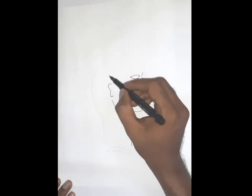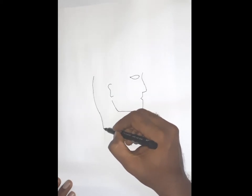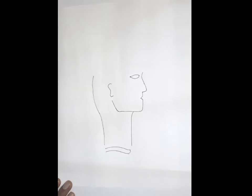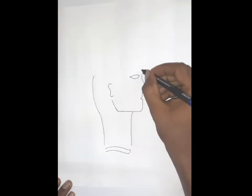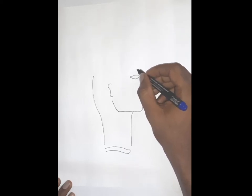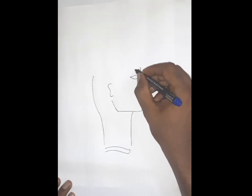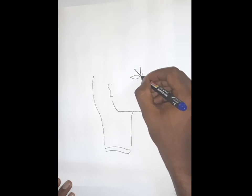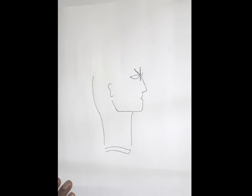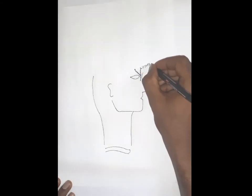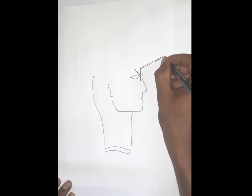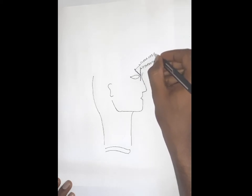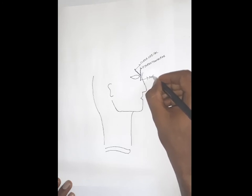The eye is needed just to show the tributaries of the facial vein. Starting with the veins from the scalp: the medial one is the supratrochlear vein and the lateral one is the supraorbital vein. Both these veins join together to form a vein called the angular vein.